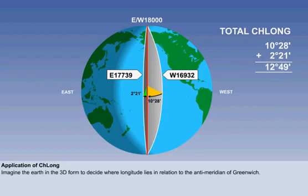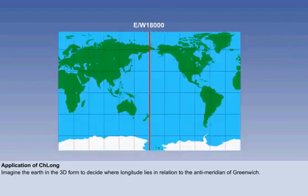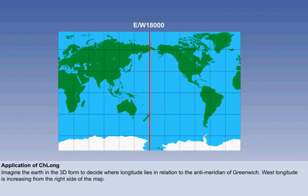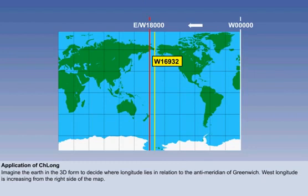Trying to solve the question by using a flat image, such as a map, can cause confusion. The westerly longitude is increasing from the right-hand side of the map until it reaches its maximum of 180 degrees.